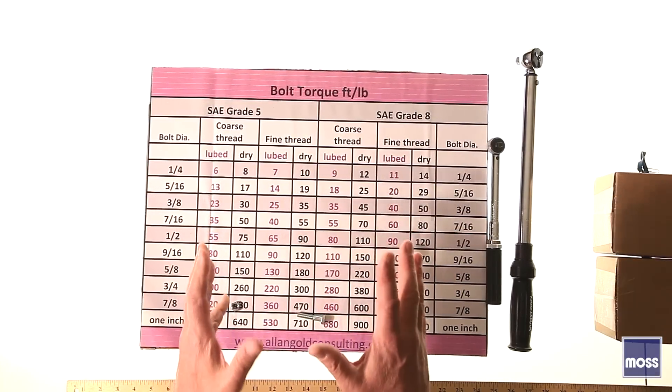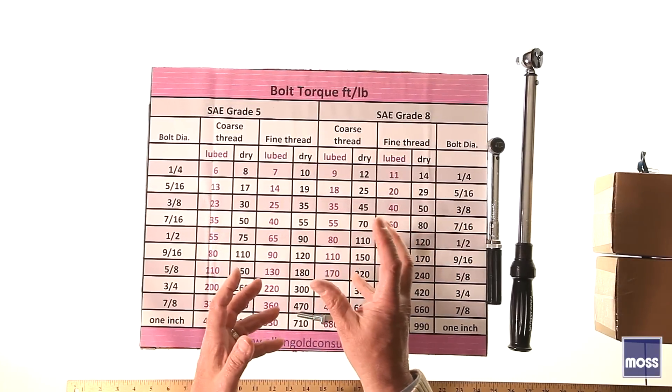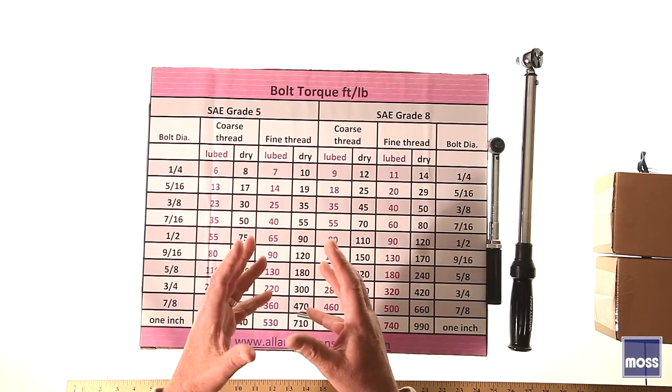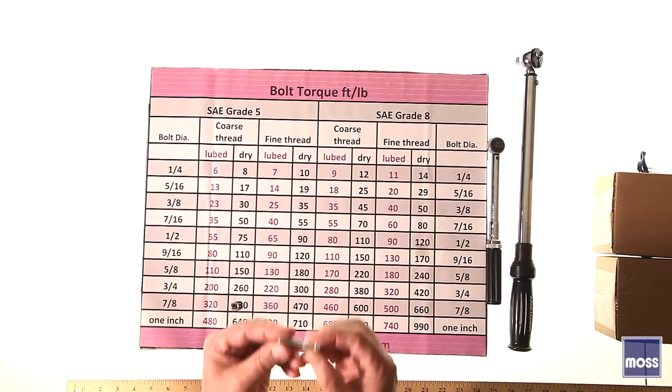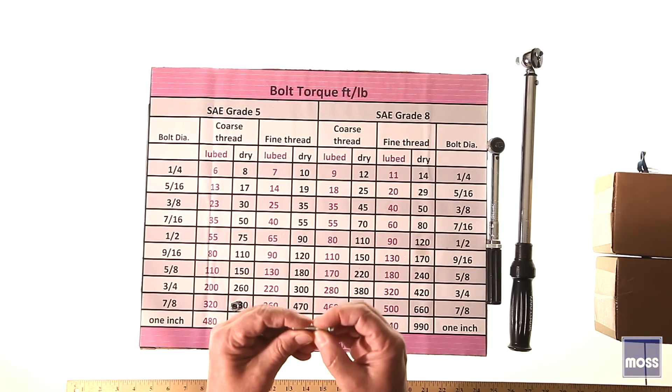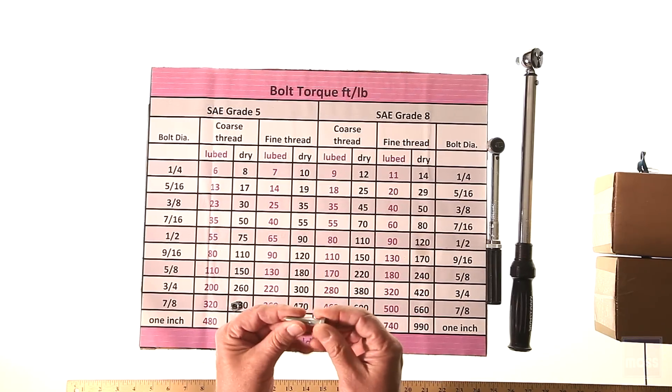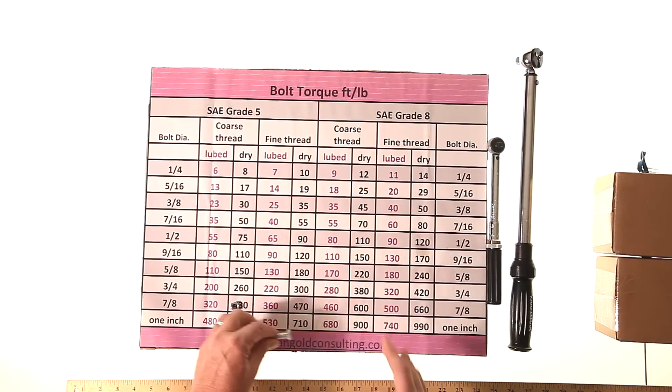In conclusion, torque is simply a measure of twisting force used to spin two fasteners together. That's going to allow us to create the tension or the stretch in this bolt or any fastener. And that in turn is going to give us the clamping force that we use to hold things together. Thank you.